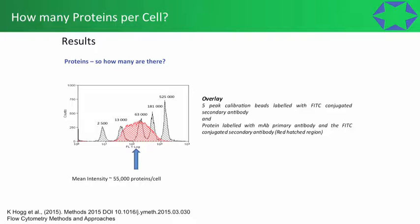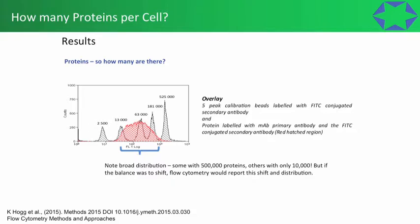Further than that, we can quantify the amount of protein in these cells with flow cytometry by using a calibration curve. This is a kit with beads that give a calibration of how many proteins there are on the beads — a calibration curve going from 2,500 targets up to 525,000 targets. We've got our biological distribution shown in red, and you can see how broad that is.